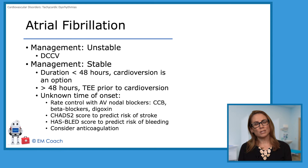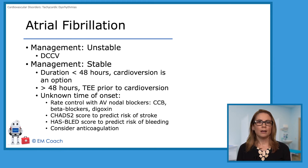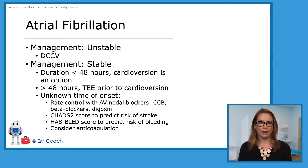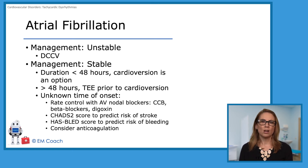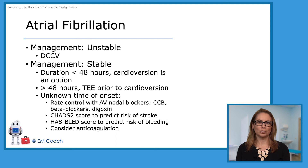If it's unknown time of onset — which, to be honest, is the most common — then you want to rate control with an AV nodal blocking agent, like a calcium channel blocker, a beta blocker, or a little more old school, you could use digoxin.